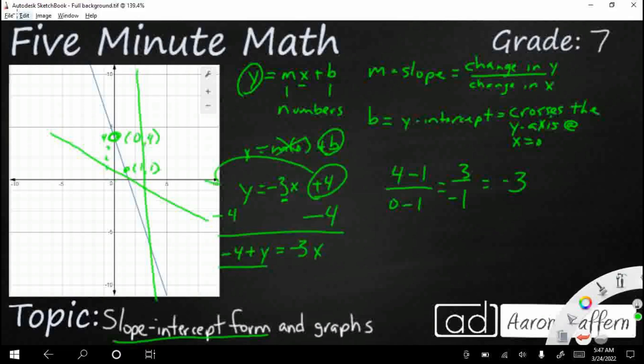Now, if we were to take this equation and just subtract 4 from both sides to get that 4 over on the left, it is still going to end up looking the same. But it's not the slope-intercept form of the equation because that always requires y to be by itself.